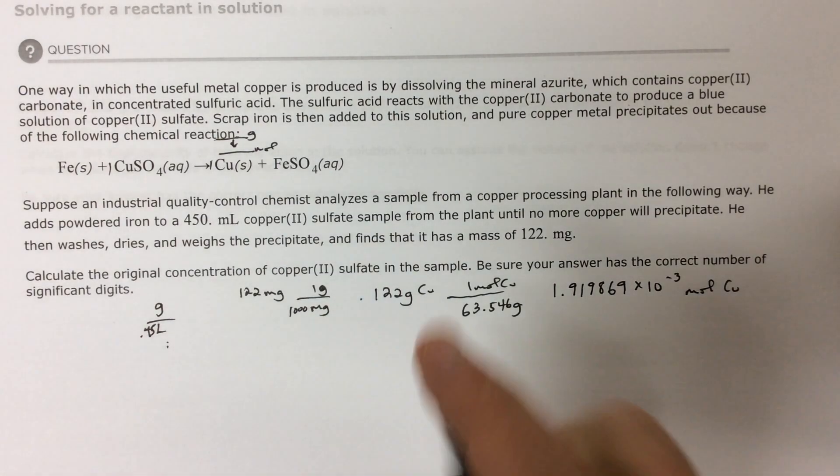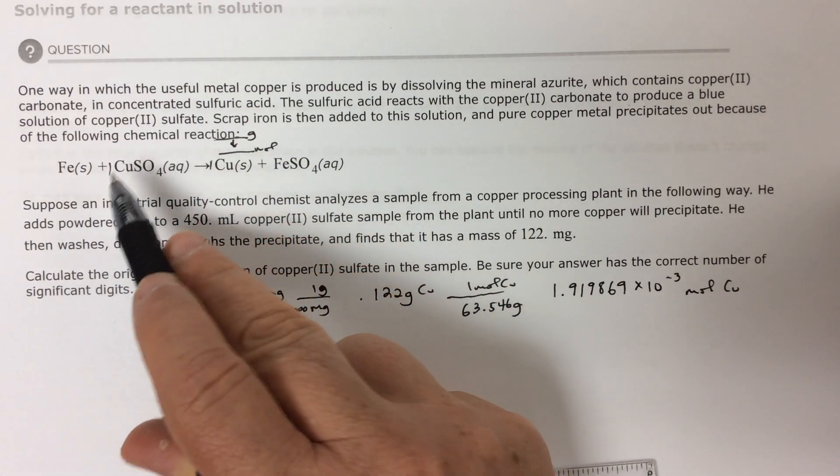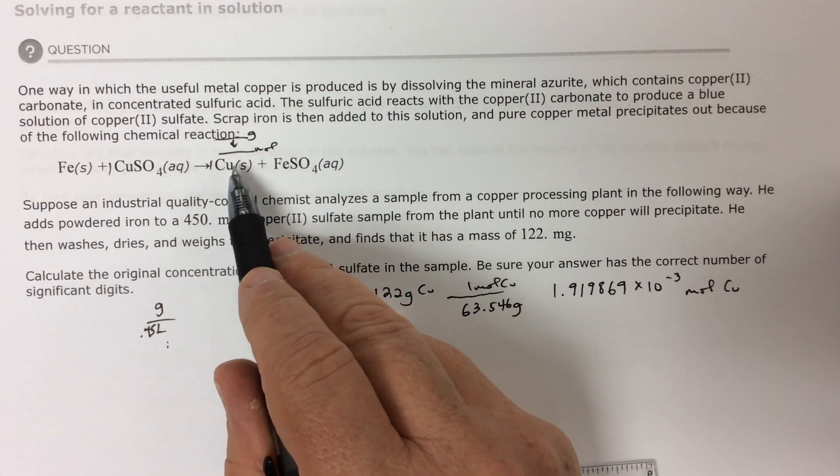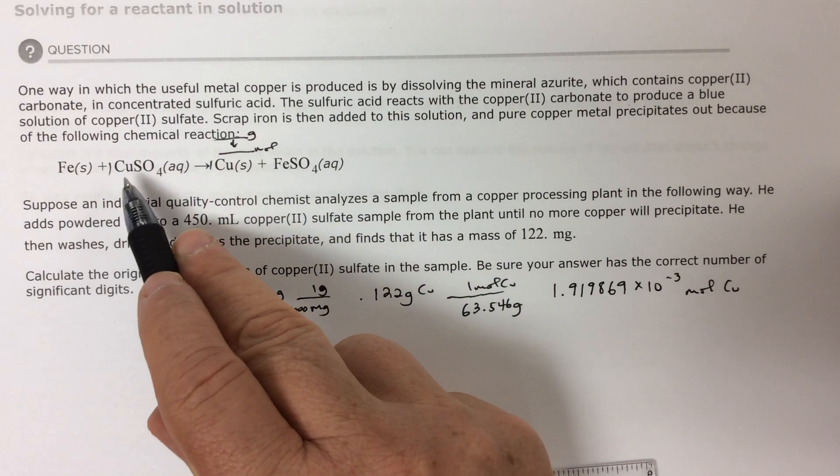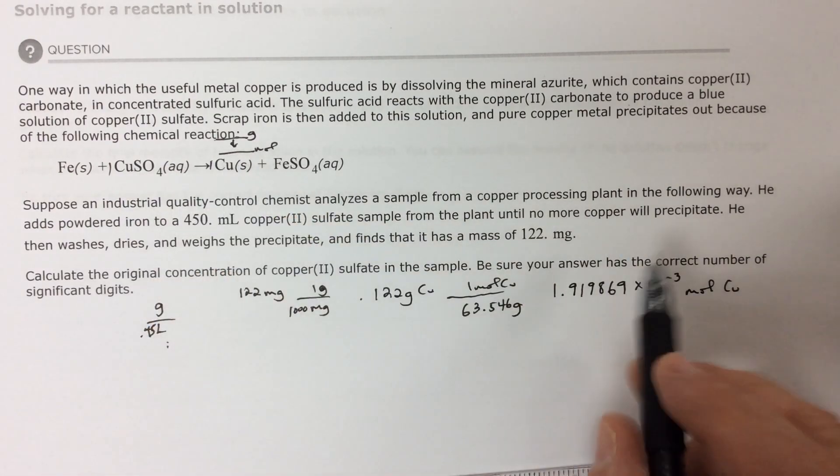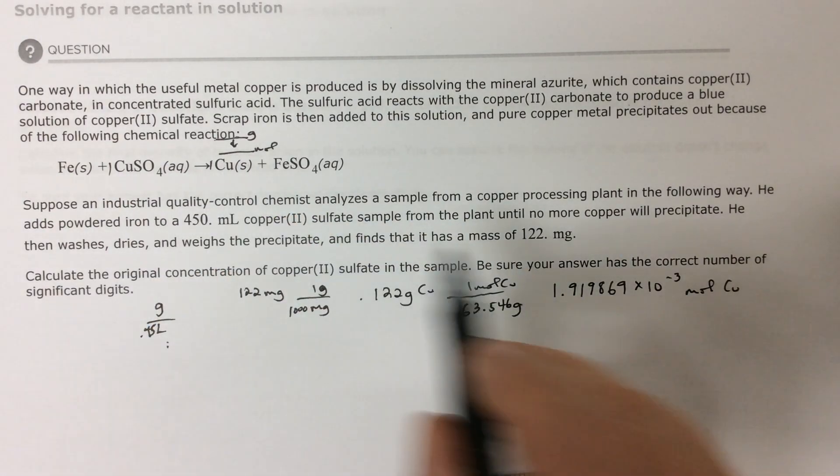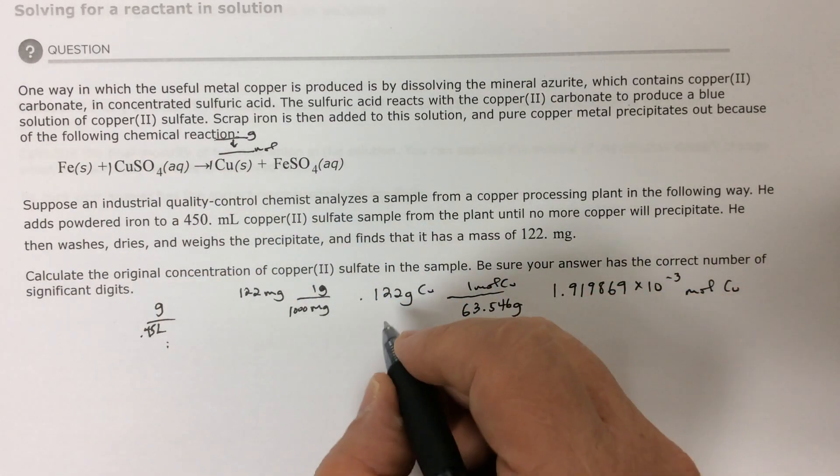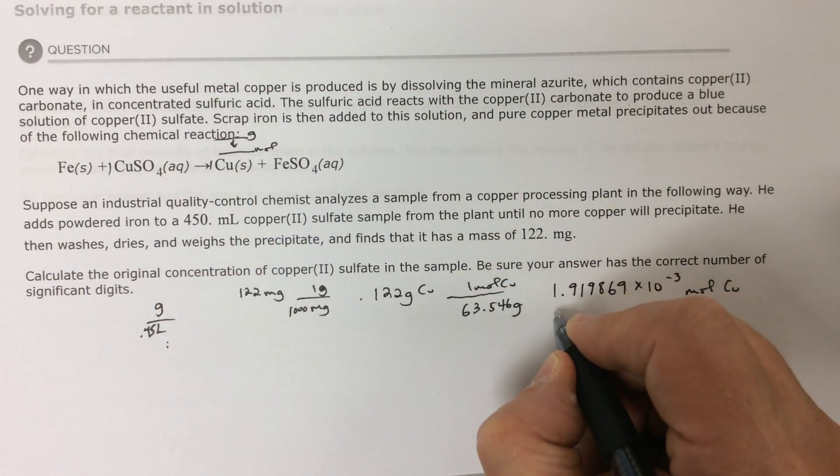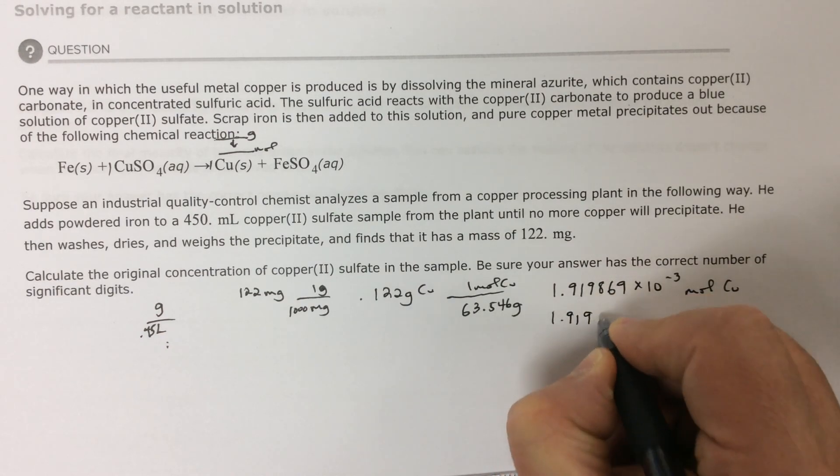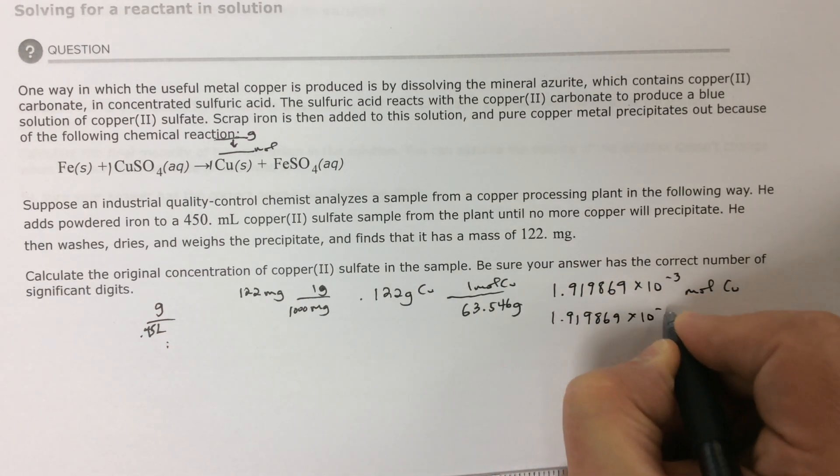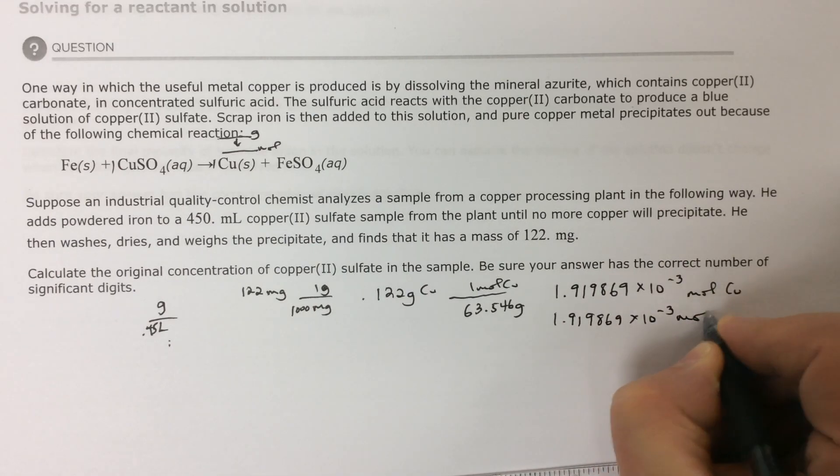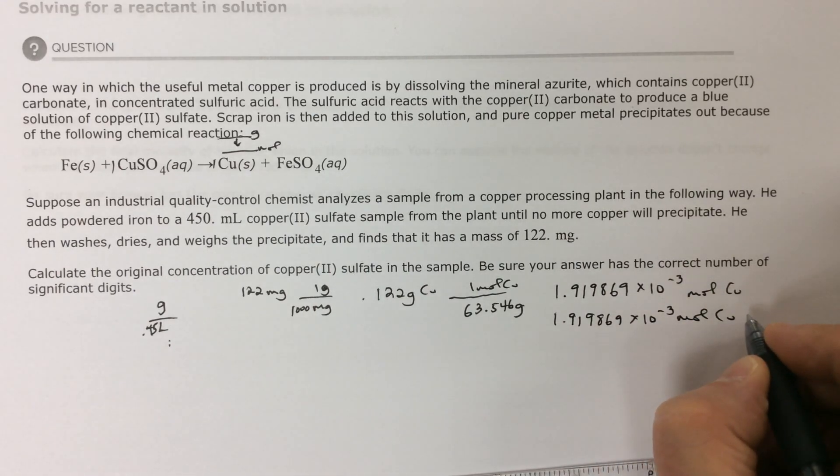Now that I have moles, that's here, I can go one to one. I have one mole of copper is to one mole of copper sulfate as this many moles of copper is to the same amount of copper sulfate. So I can jump down and say that I have 1.919869 times 10 to the minus three moles of copper sulfate.